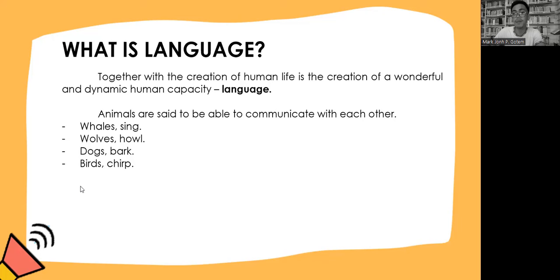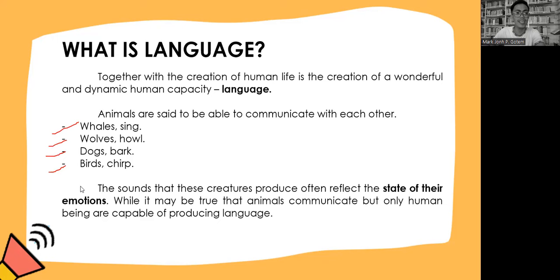Animals are said to be able to communicate with each other. The whales can sing, the wolves can howl, the dogs can bark, and the birds can chirp. The sounds that these creatures produce often reflect the state of their emotions. While it may be true that animals communicate, remember: only human beings are capable of producing language. Animals can communicate, but they are not capable of producing language. Only humans can produce language.